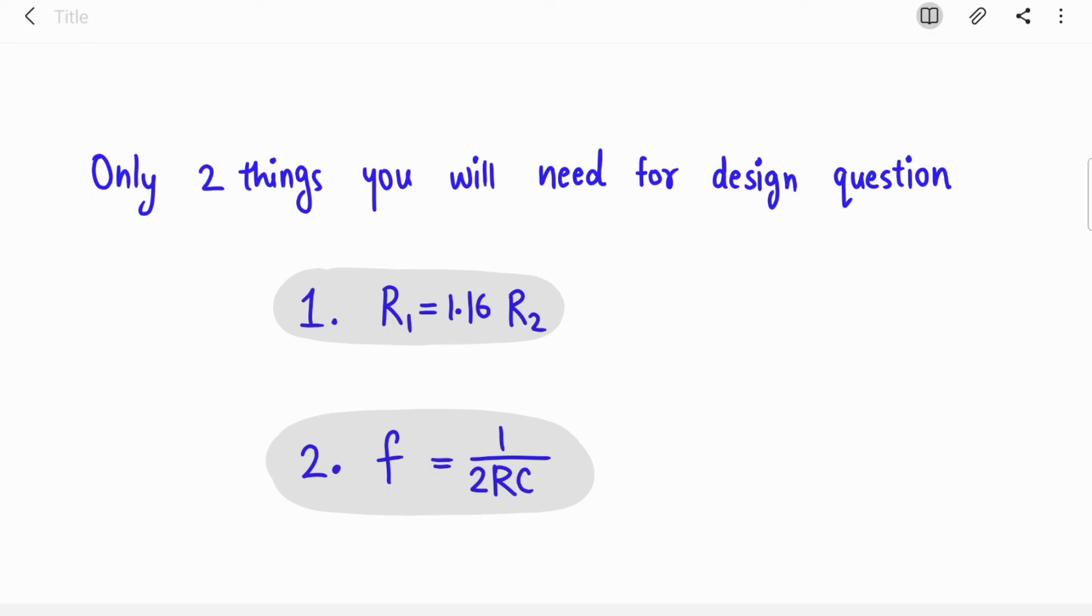By solving design questions in exams, you will need these two equations: the relation between R1 and R2, and the frequency of oscillations. They will give you the frequency in the question like 1 kilohertz and you will be asked to find the values of R, C, R1, R2, everything. Designing means finding the values of these components. We will solve the design question in the next video.